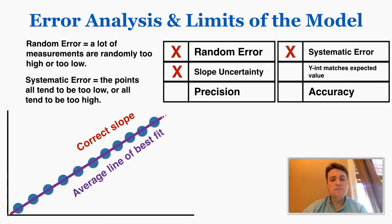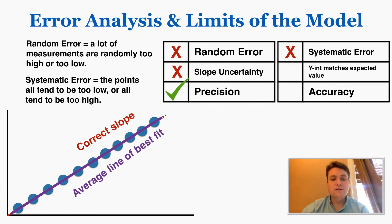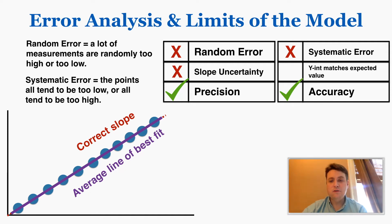Because there's no random error and no slope uncertainty, this graph is precise. The data points are precise because they line up with each other in a similar expectation of what the actual line will be — they're very close together. And it's also accurate because they line up with the true correct slope, and the y-intercept and slope match the expected values.